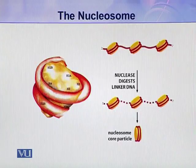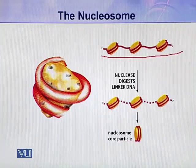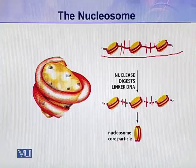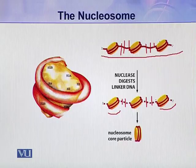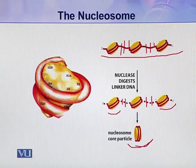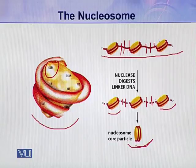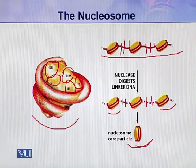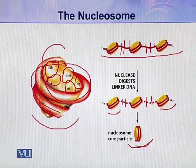Here you can see the chromatin fiber. If we digest this fiber with nucleases, the linker DNA is digested and individual nucleosomes are produced. If we continue digesting with nucleases, it results in the nucleosome core particle. In this particle there are eight histone molecules, and around this octameric complex the DNA molecule is wrapped approximately two rounds.